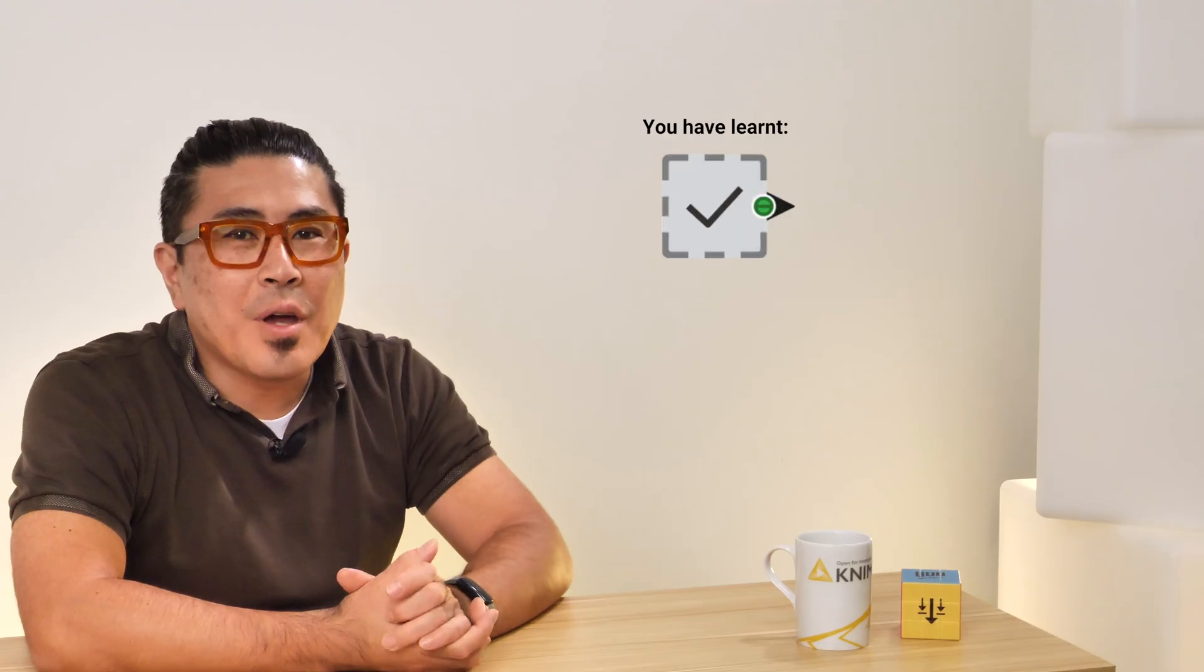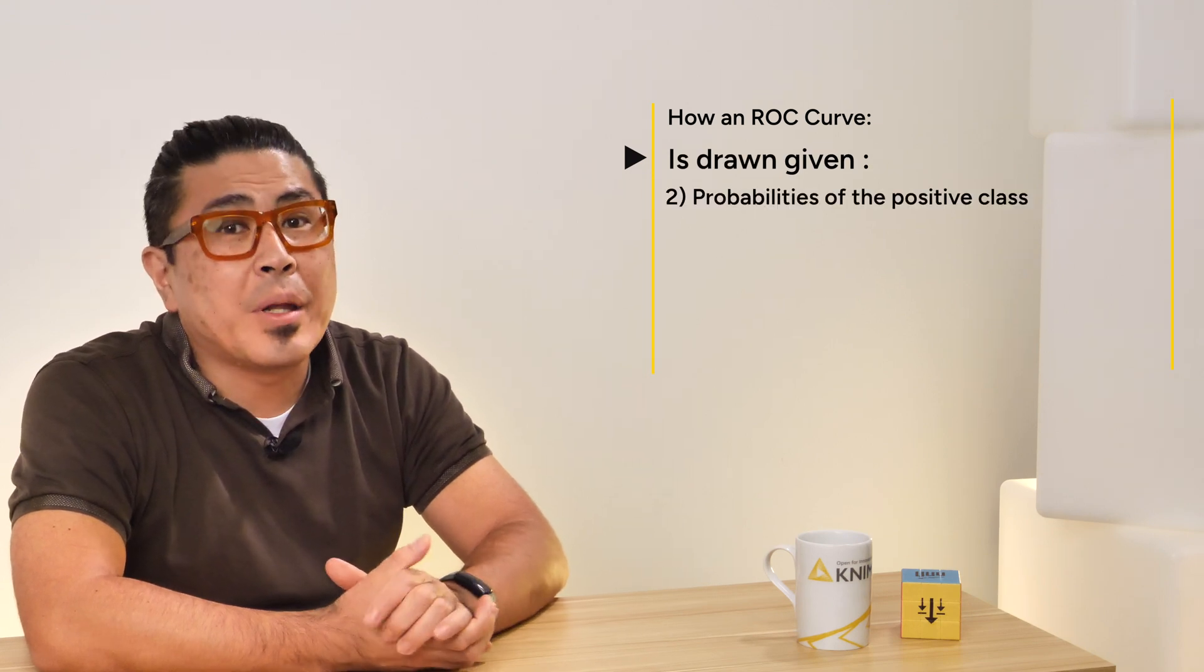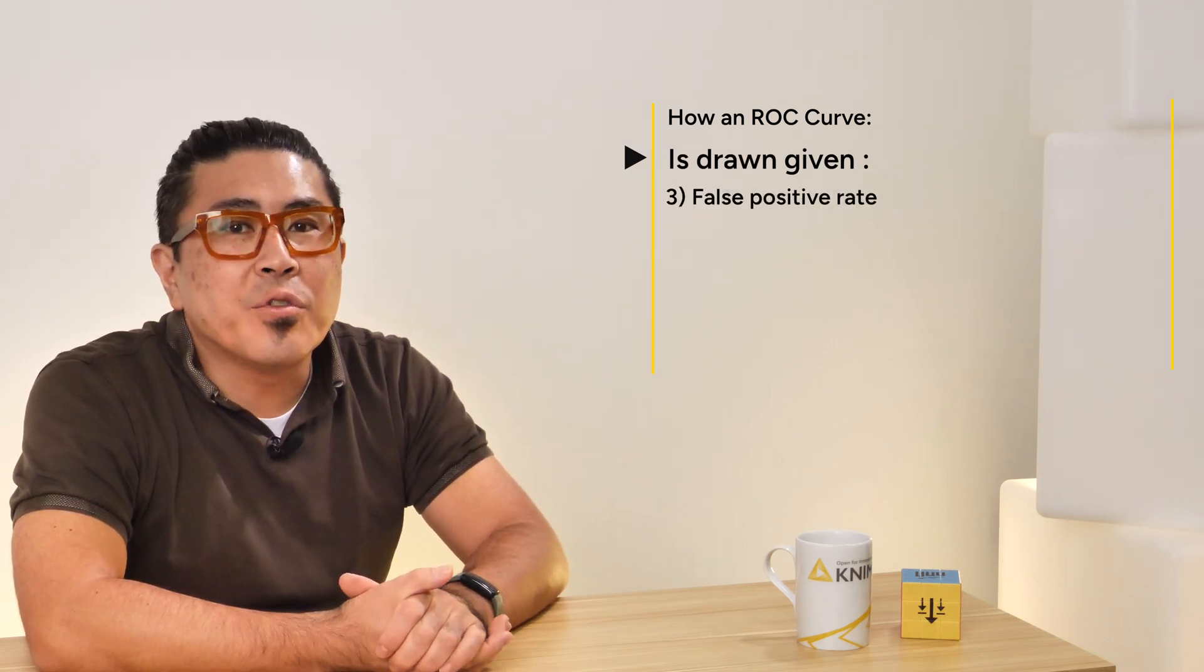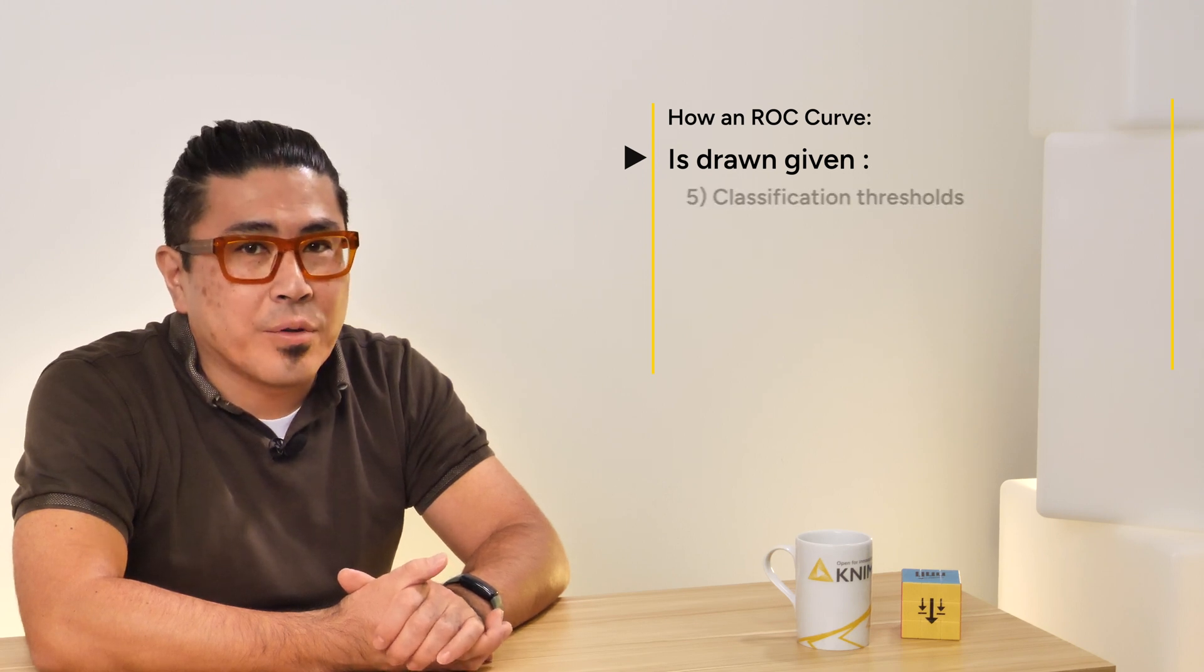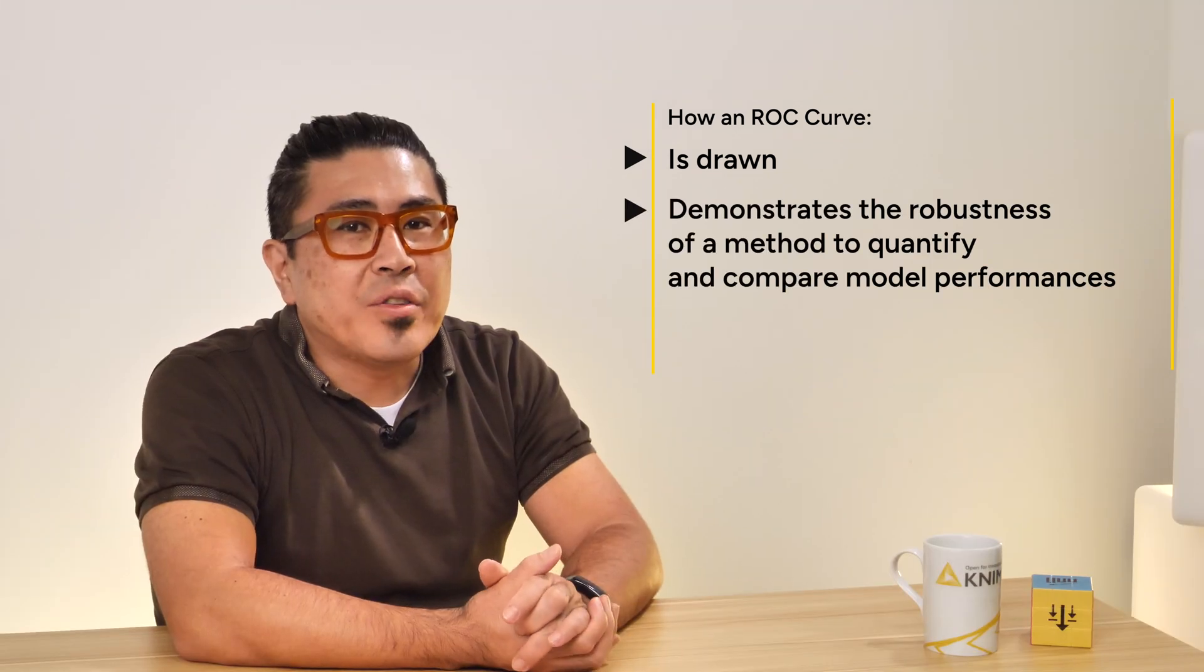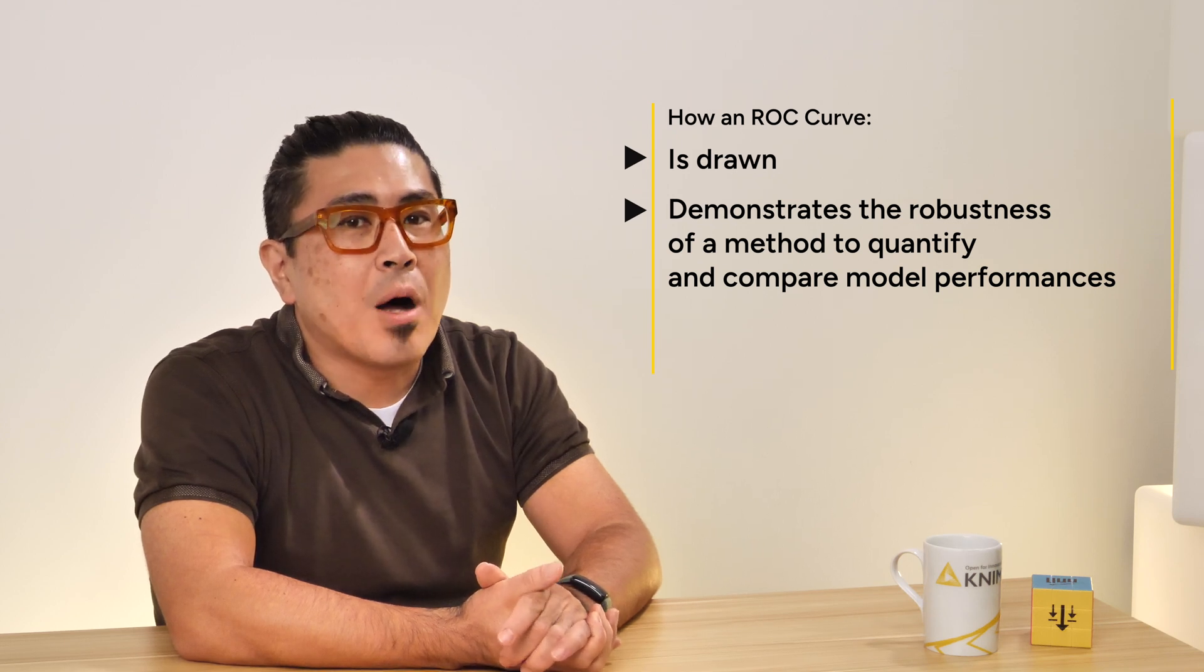In this video, you have learned how an ROC curve is drawn given the actual class values, probabilities of the positive class, false positive rate, the true positive rate, and classification thresholds. You have also learned about the robustness of the ROC curve as a method to quantify and compare model performances.